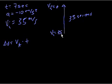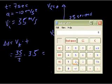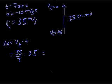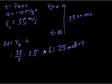The average velocity is just the average of your initial velocity and your velocity at the top of the curve. So the average of 35 and 0 is just 35 divided by 2, which equals 35 over 2. And then the time is 3.5 seconds. 35 divided by 2 times 3.5 equals 61.25 meters.